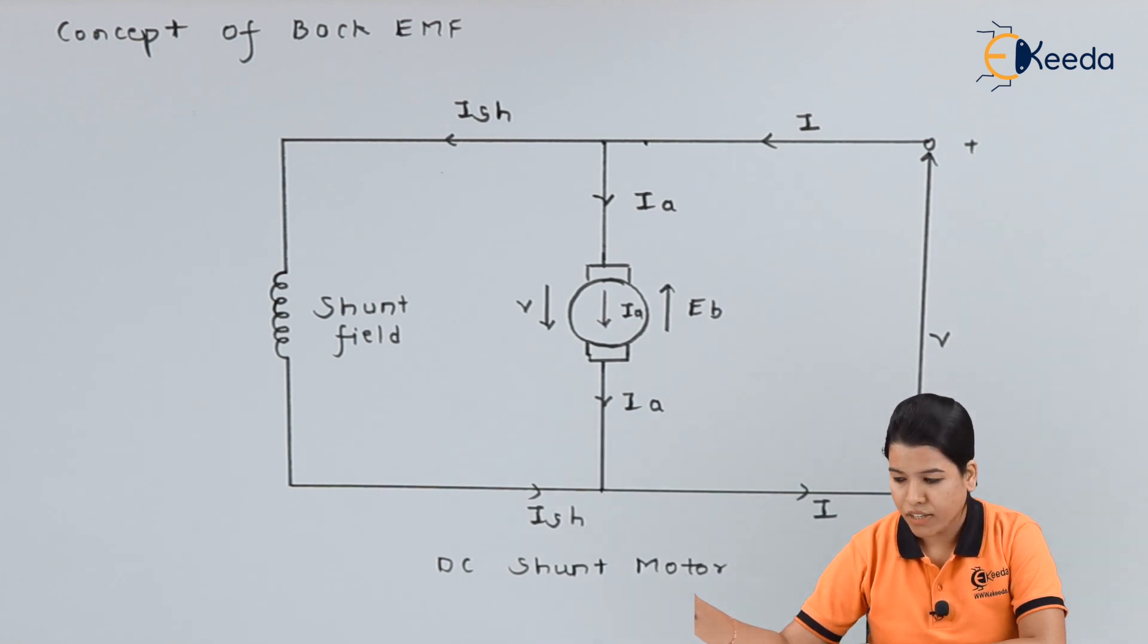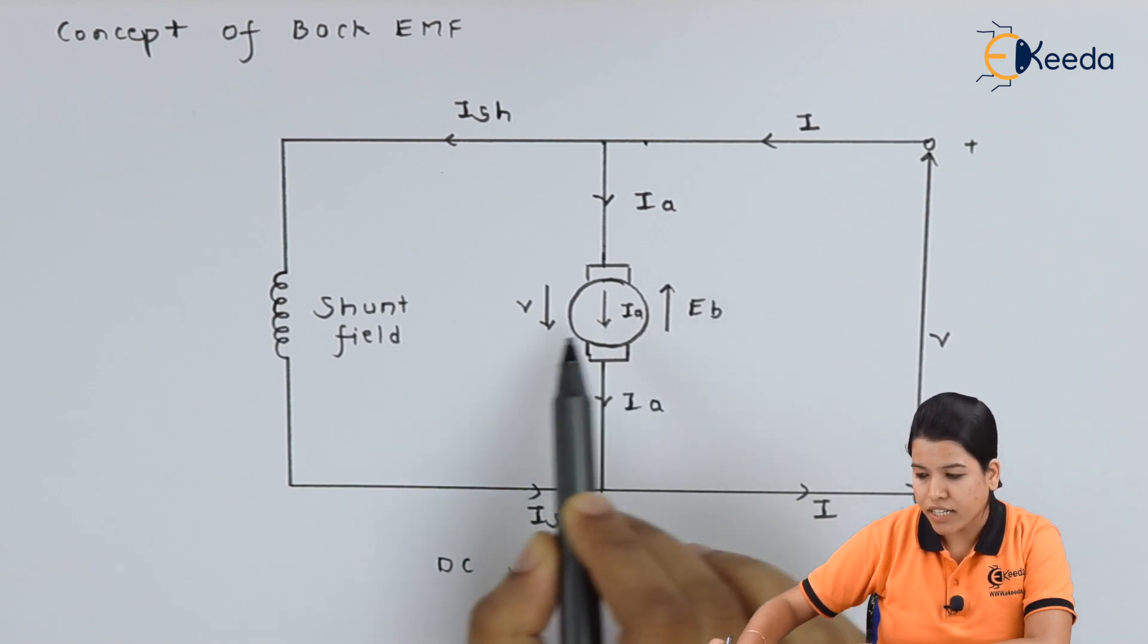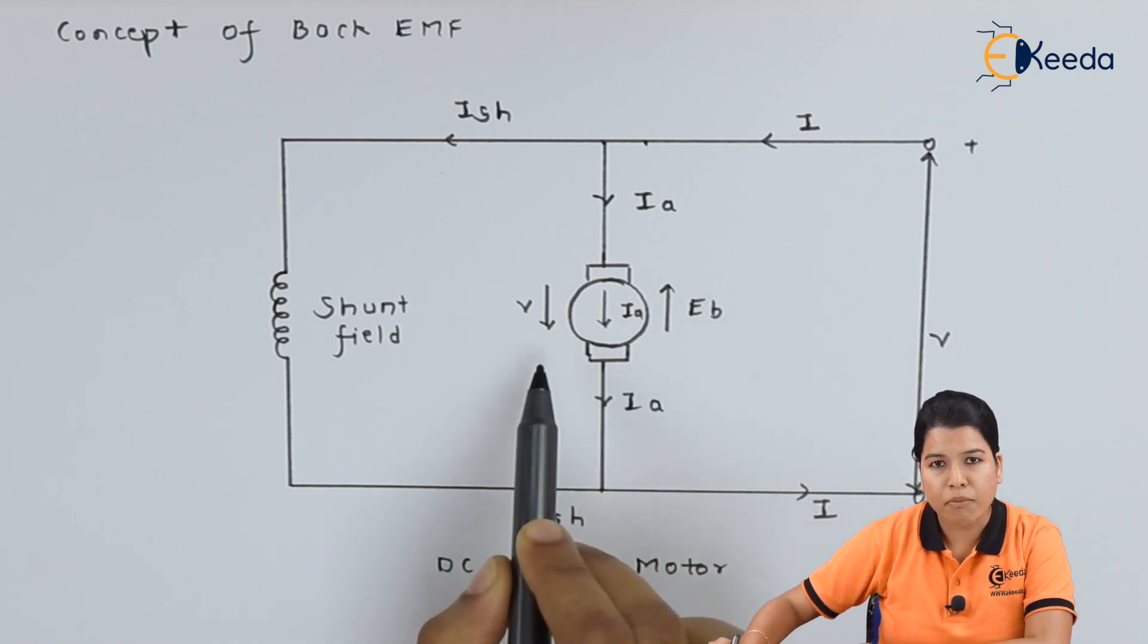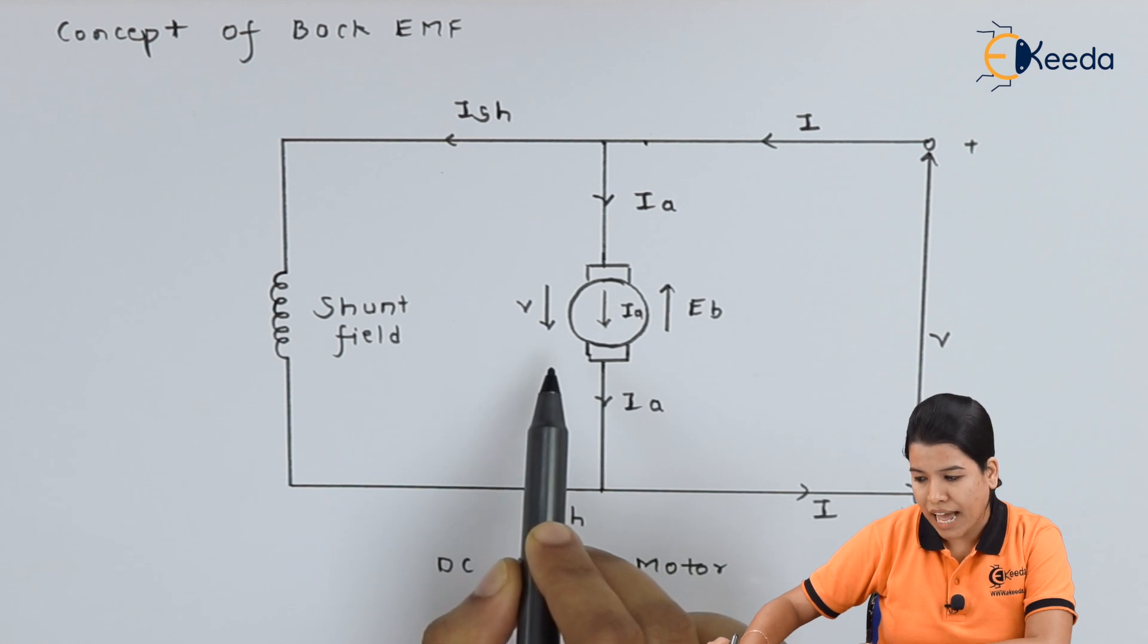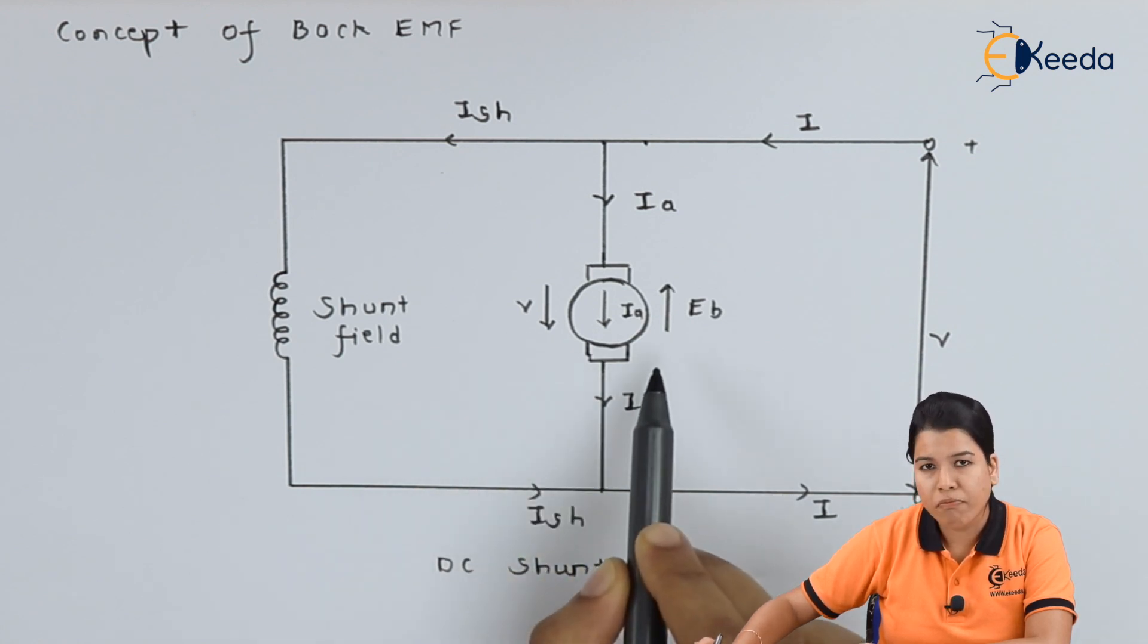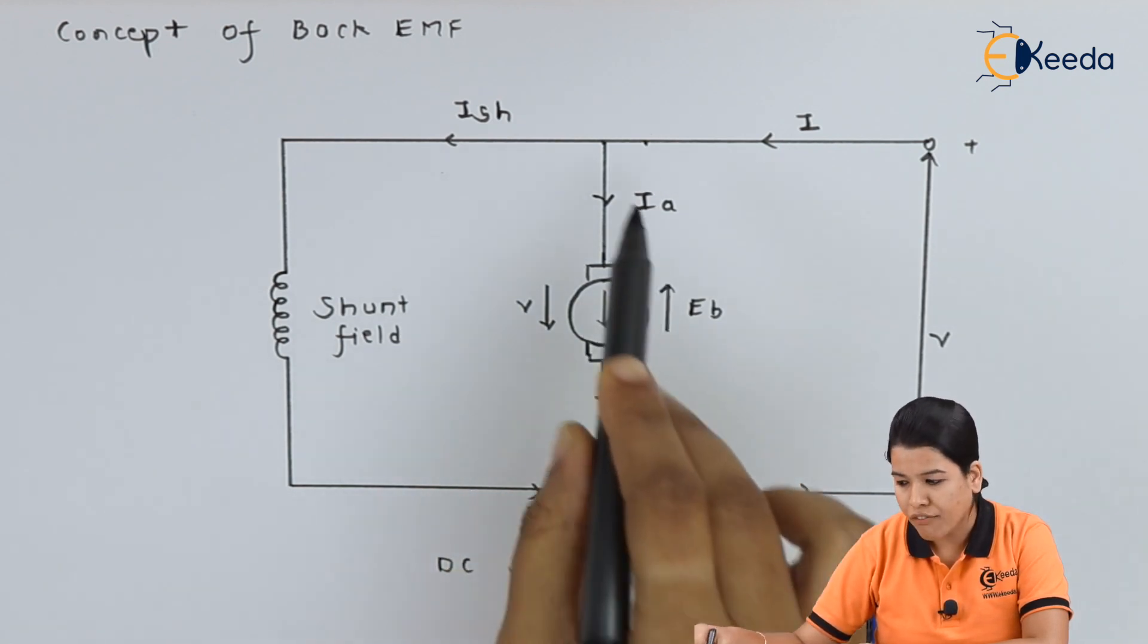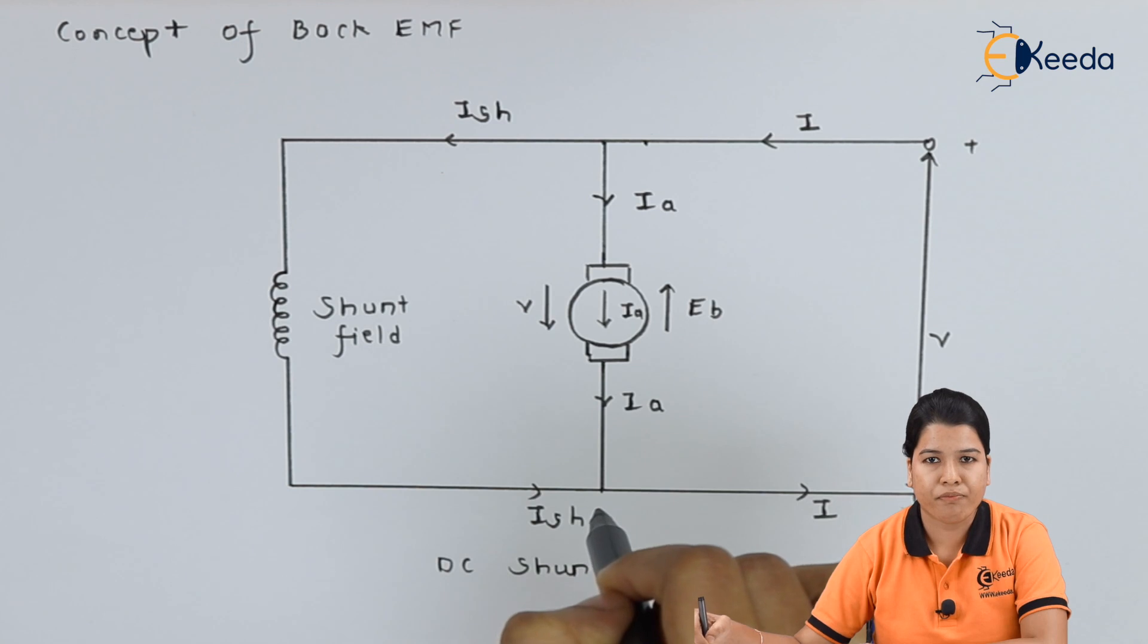Now as the armature conductor is cutting the magnetic field, EMF is induced in the armature conductor. We know that this induced EMF always acts in opposite direction to the supplied voltage.